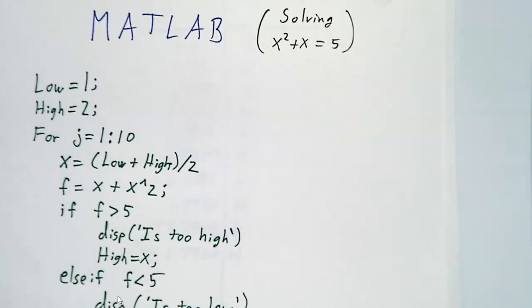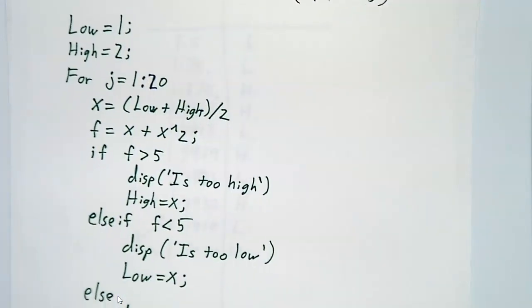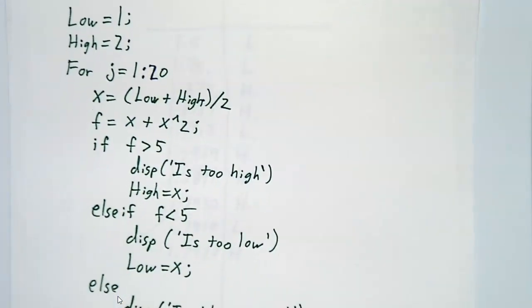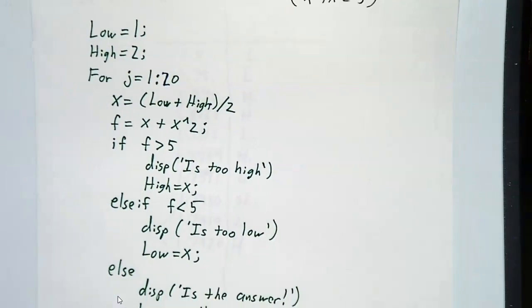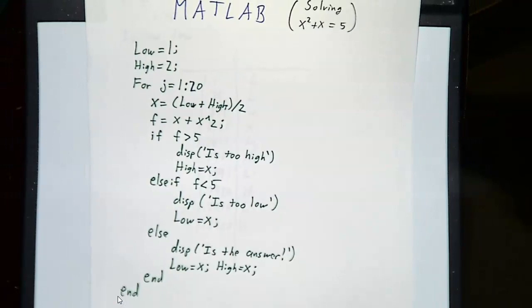That's three decimal places of accuracy. If we wanted more accuracy, we would have done our loop 20 times. If we did the loop 20 times, we would have gotten six decimal places of accuracy.